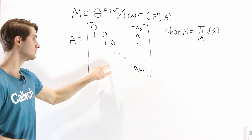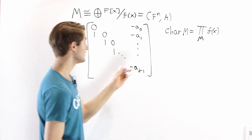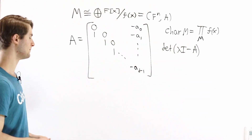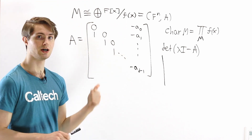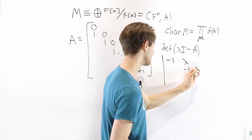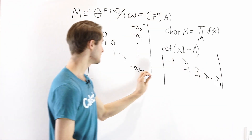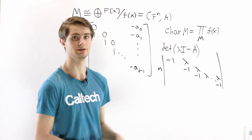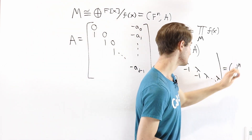We're going to show this is related to a very important property of matrix A. In order to do that, we're going to ask: what is the determinant of λI minus A, where λ is a formal variable? To do this, we first look at a particular matrix that will show up a lot. It looks like this: negative 1, lambda, negative 1, lambda, negative 1, lambda, and so on — an n×n matrix with negative 1s along the diagonal and lambdas on the superdiagonal.